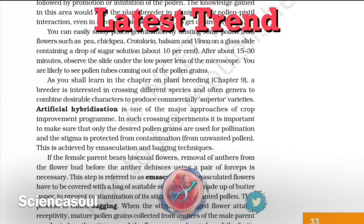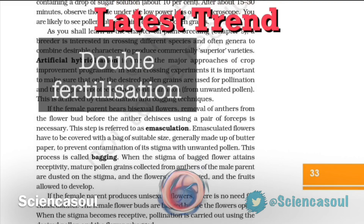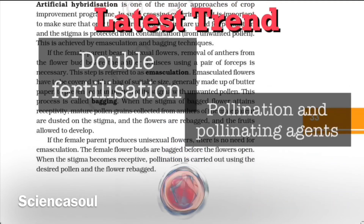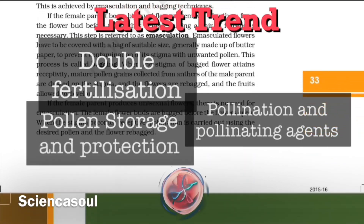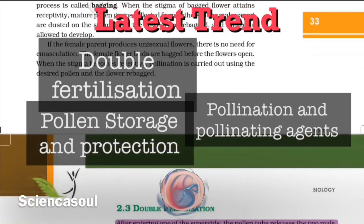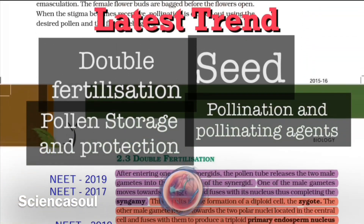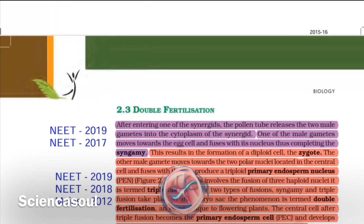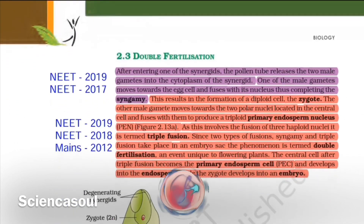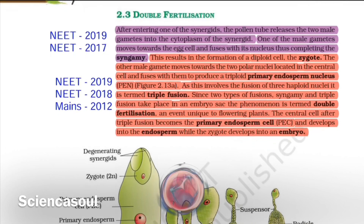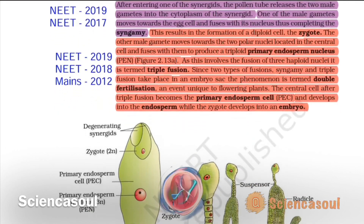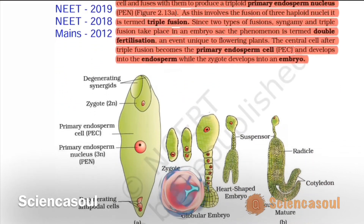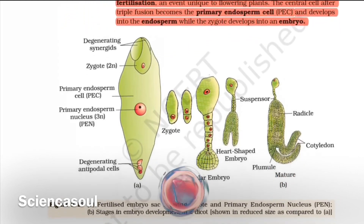The latest trend of questions is double fertilization, pollination and pollinating agents, pollen storage and protection, and seed — especially endosperm and perisperm. Attention! There is a 90% chance of this topic appearing in NEET 2020. Please give a brief reading to double fertilization from reference books too. If you skip it, you will surely regret it.